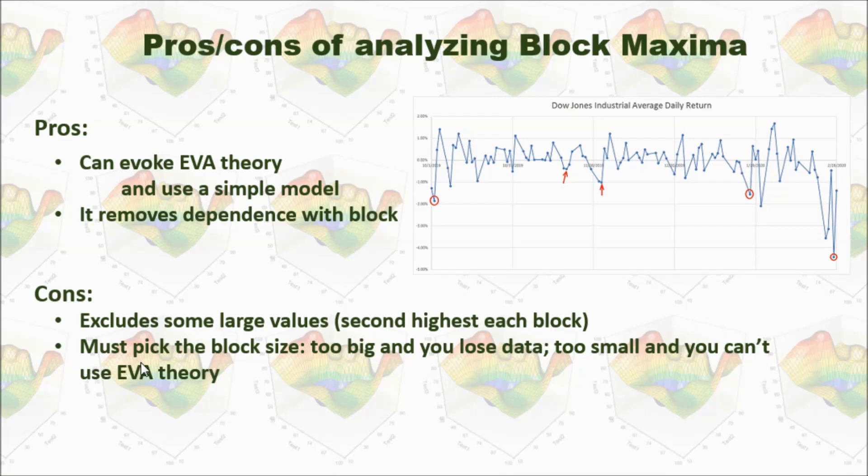And also, you must pick the block size. If it's too big, you will lose data. For example, if we set this block as one year, we only pick up one data point for a year, and then you will lose a lot of data. If it's too small, you can't use EVA theory.